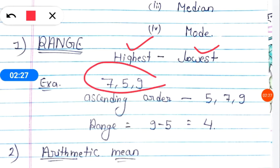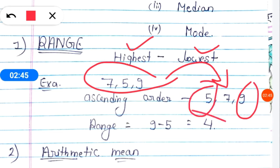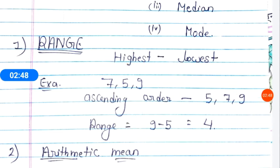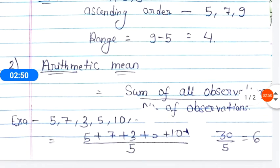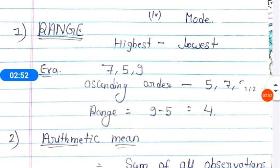For example, see this question given here: 7, 5, 9. Suppose these are some values. So first we will change it to ascending order because only then we can know which value is lowest and which value is highest. So here we can see 9 is the highest value and 5 is the lowest value. So 9 minus 5 is equal to 4.